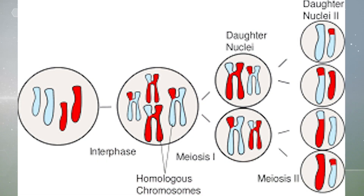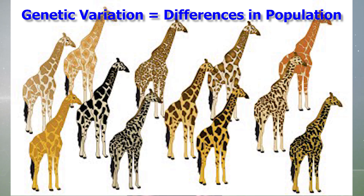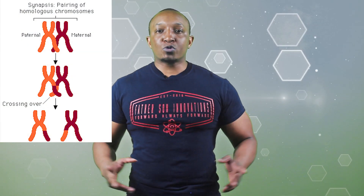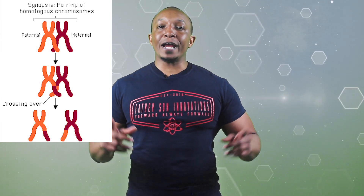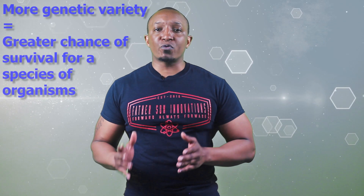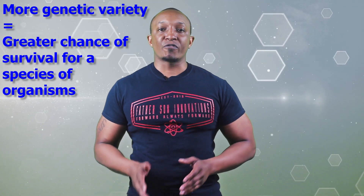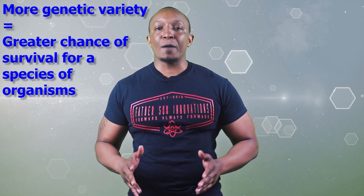Meiosis also produces daughter cells that are genetically different from the parent cell, which leads to more genetic variation or differences in a population. Probably the most important part of meiosis is during prophase 1, which is when crossing over occurs. When chromatids cross over, homologous chromosomes trade places of genetic material, resulting in new combinations of alleles for certain traits like hair color, eye color, and height. Crossing over is important for species survival because it provides more genetic variation. As stated in previous videos, the more genetic variety a species has, the more likely it is to survive because one thing can't wipe out its entire population.